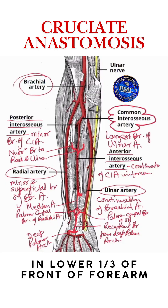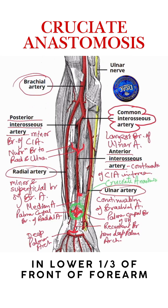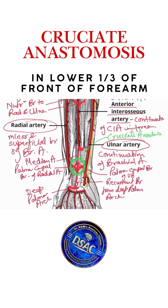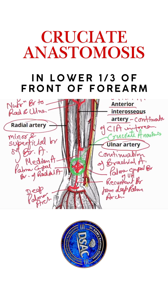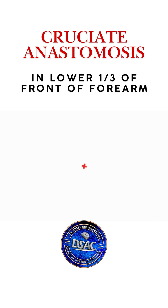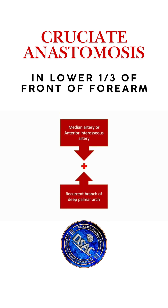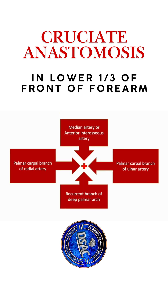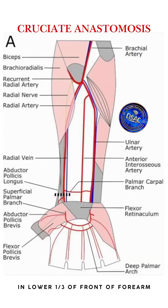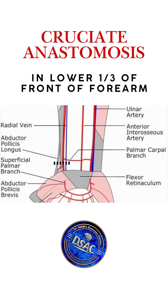So, what you're finding here is a cruciate anastomosis at the front of the wrist in the forearm space of Parona. Here we go — this is the palmar carpal anastomosis.